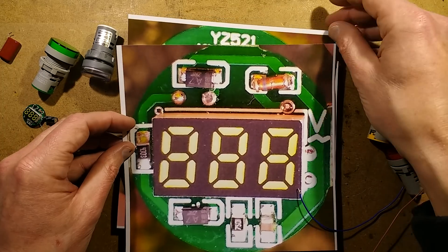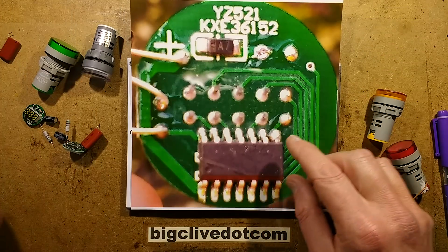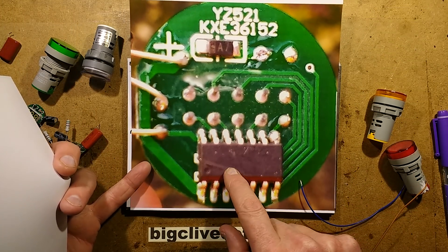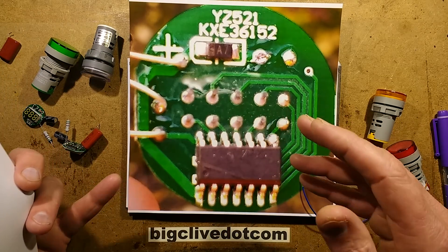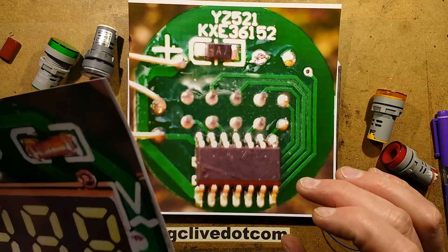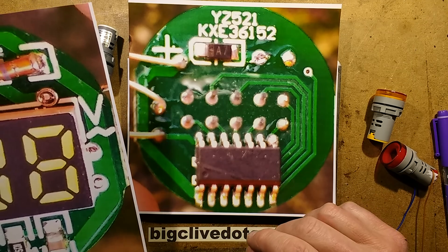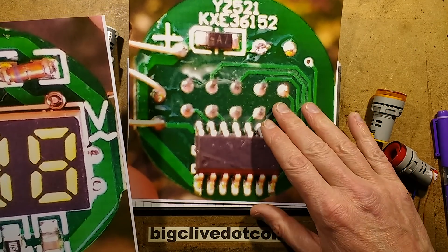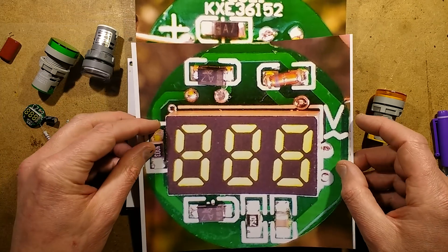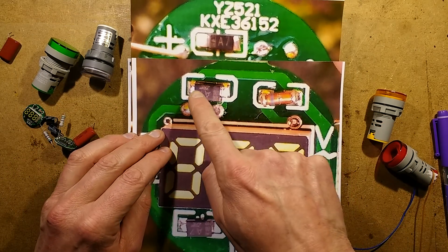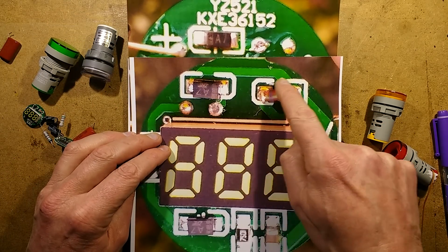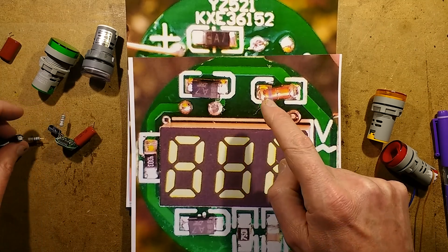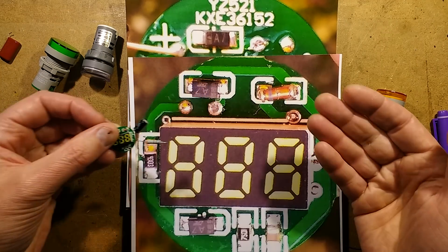So I decided to reverse engineer it, partly because I wanted to try and work out what this chip was if it was a standard chip. There's a diode on this side and the chip, and that diode and this one on the other side, and this zener and the off-board electrolytic capacitor form the power supply.